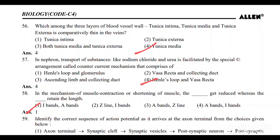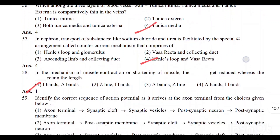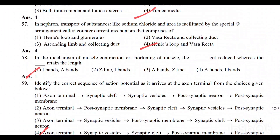Question number 56: Among the three layers of blood vessel walls — tunica intima, tunica media, and tunica externa — tunica media is comparatively thin in the veins. Option 4 is the correct answer.